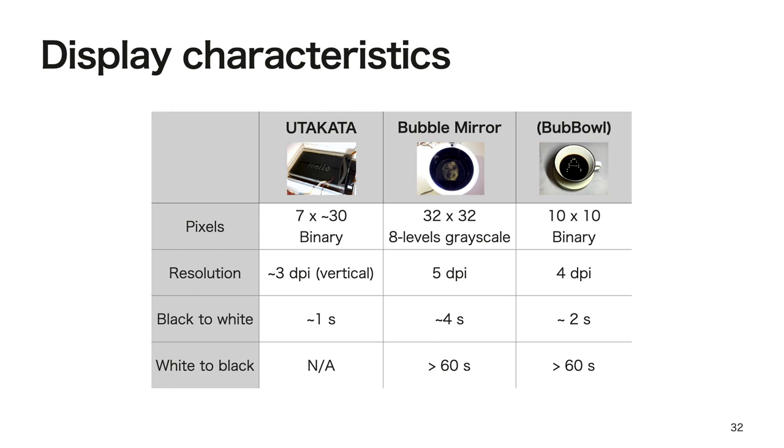The characteristics of the proposed displays are shown in the following table. Utakata can display 7 pixels vertically and about 30 pixels horizontally. Bubble Mirror can display 32 by 32 pixels with 8 levels of grayscale. In Utakata, the pixel electrodes were placed in a single row with 7.6 mm intervals, resulting in a vertical pixel resolution of approximately 3 dpi. In Bubble Mirror, the interval between the pixels was 5.1 mm vertically and horizontally, and the display resolution was 5 dpi. Black to white, that is, the time until the bubbles appeared, was about 1 second for Utakata, and about 4 seconds for Bubble Mirror. White to black, that is, the time until the bubbles spontaneously disappeared, was more than 60 seconds for Bubble Mirror. Since Utakata uses a ticker-like bubble flow, it can realize the display with a high response time.